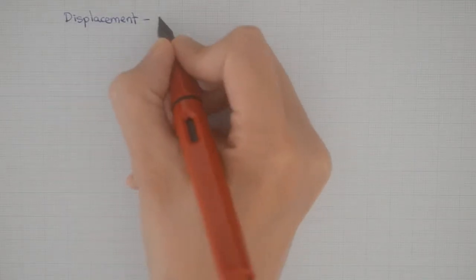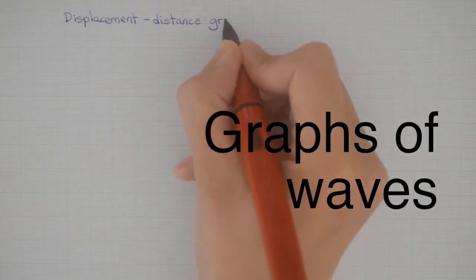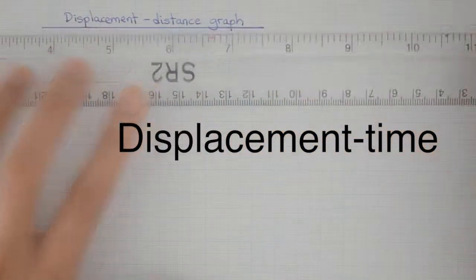We are going to look at how we can graphically represent waves by drawing either a displacement-distance graph or a displacement-time graph.